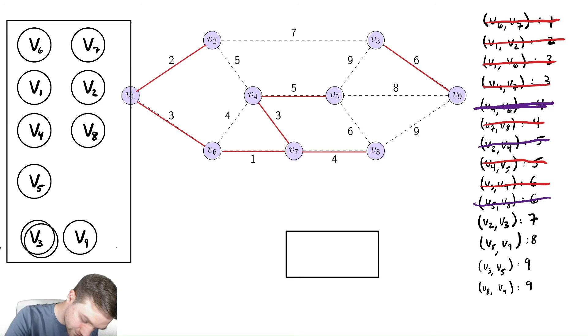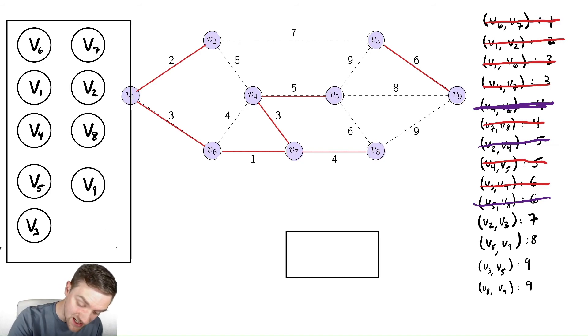So let's do that. We make v3 go there, make v9 go there, and then we add the edge between v3 and v2. So the edge between v3 and v2 gets added.